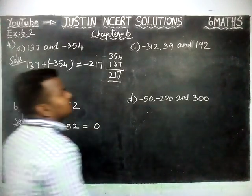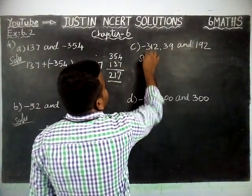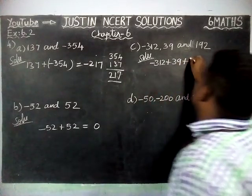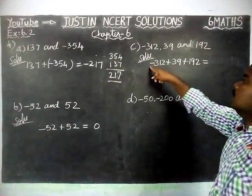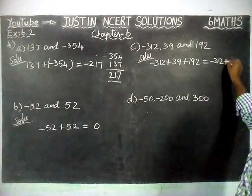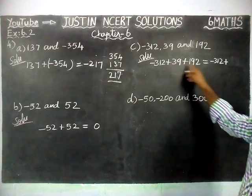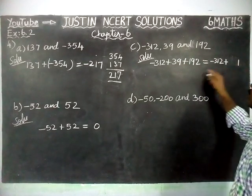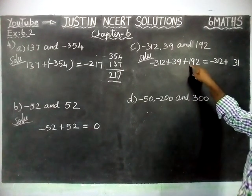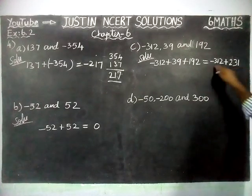And then part C: minus 312, 39 and 192. Solution: minus 312 plus 39 plus 192. This is a negative number; these two are positive numbers. So we will write the negative number as it is, plus we will add these two positive numbers. 39 plus 192: 9 plus 2 is equal to 11, remaining 1. 9 plus 3 is equal to 12, plus 1 is 13, remaining 1. In the hundreds place 1 plus 1 is equal to 2, so the sum is 231.